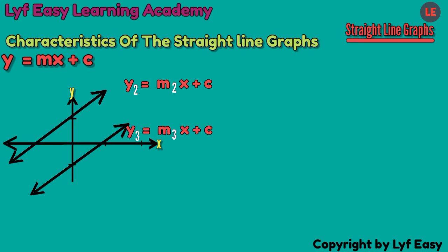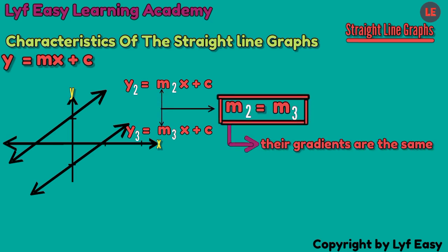So because we say they are parallel, therefore this m2 will be equal to this m3 which simply means their gradients are the same, and bear in mind that these lines are not necessarily to be in the same length.